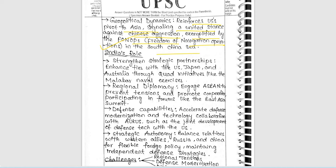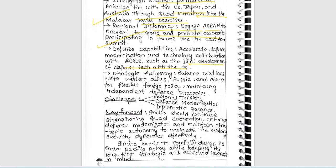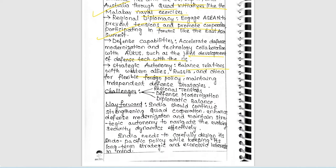India's role section: strengthen strategic partnership — enhance ties with US, Japan, and Australia through Quad initiatives like Malabar naval exercises. Regional diplomacy — engage ASEAN to prevent tensions and promote cooperation. Defense capabilities — joint development of defense ties with the US. Strategic autonomy — balanced relations with Russia and China for a flexible foreign policy maintaining independence. Very good — all important points have been written. Challenges section: regional tensions, defense modernization, and diplomatic balance are mentioned, but this flowchart is not enough — some important information needs to be written in more detail.